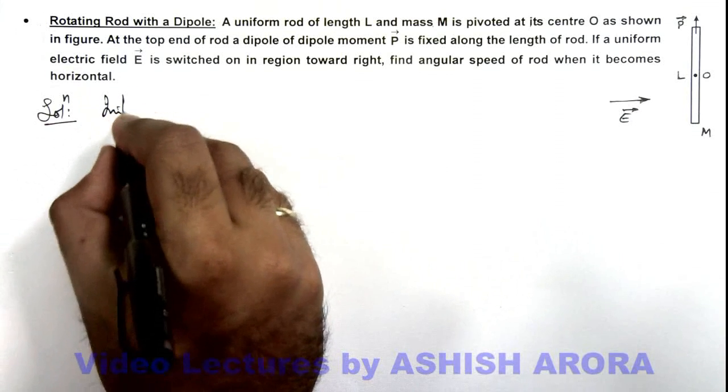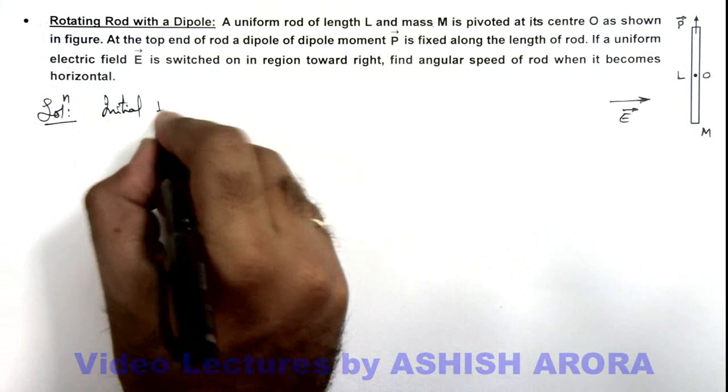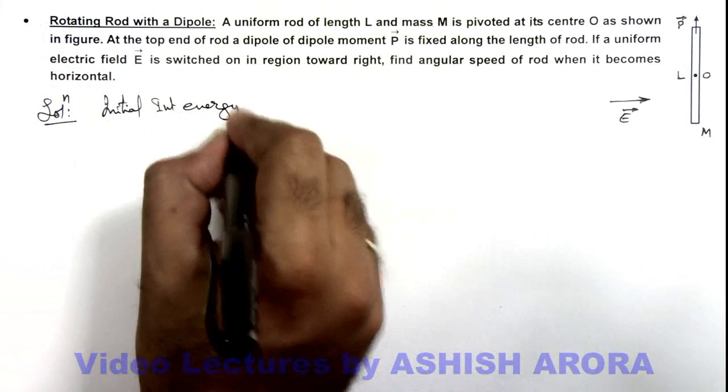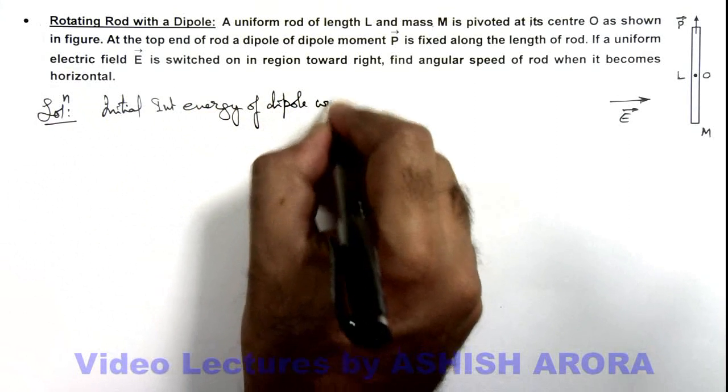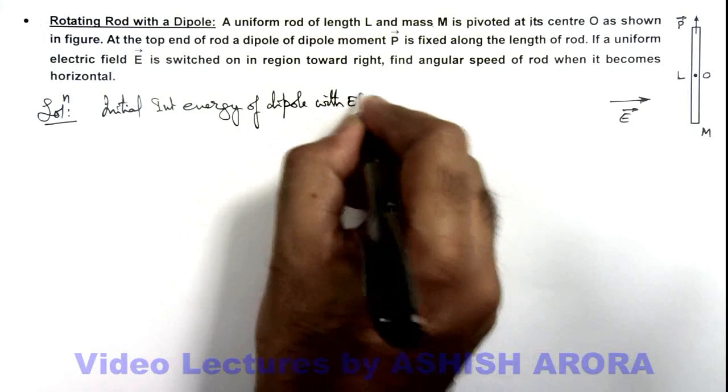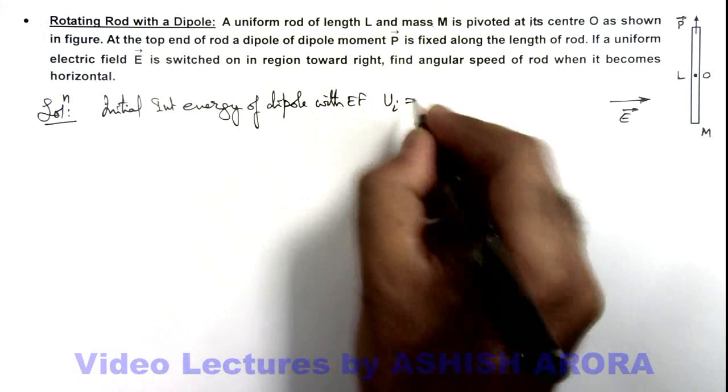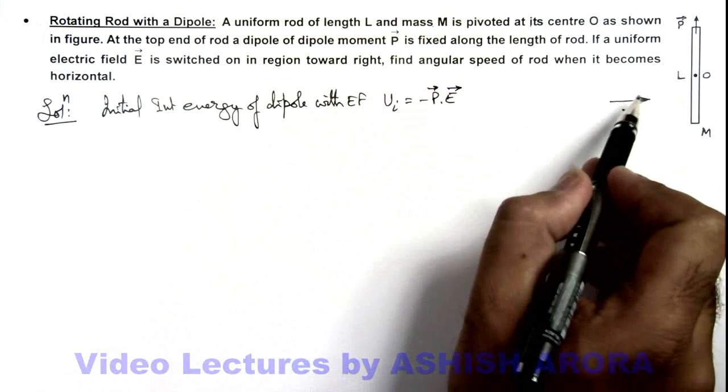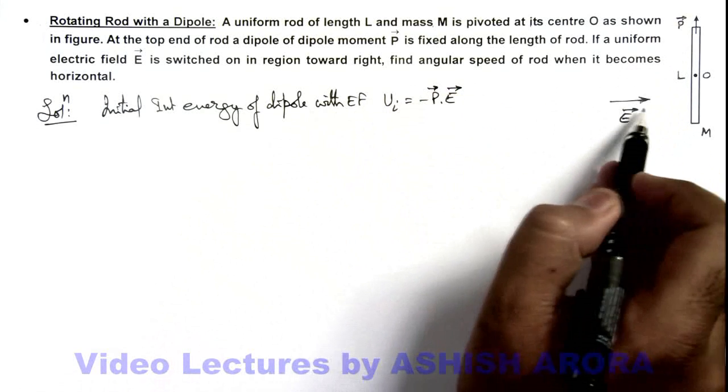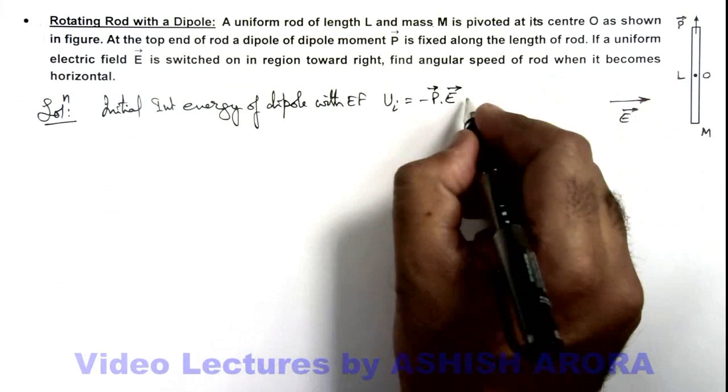If we calculate the initial interaction energy of dipole with electric field, this can be given as minus P dot E. And here you can see the angle between dipole moment and electric field is 90 degree, so this will be zero.